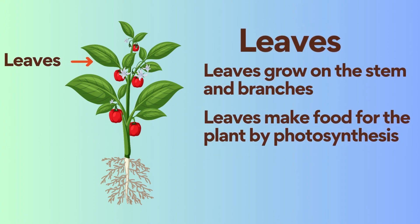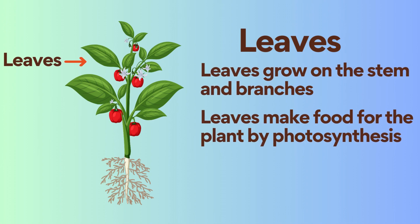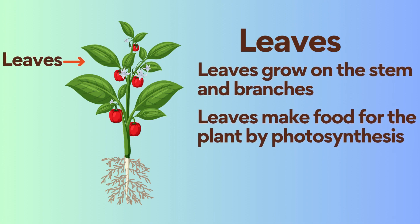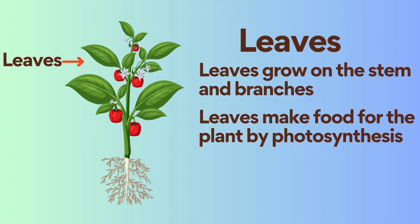Leaves grow on the stem and branches. Leaves make food for the plant by photosynthesis.